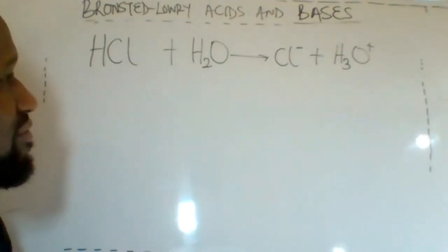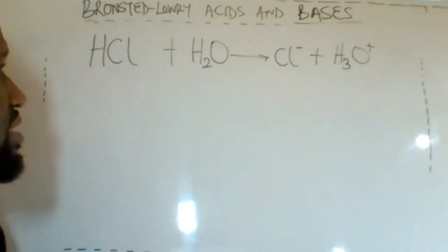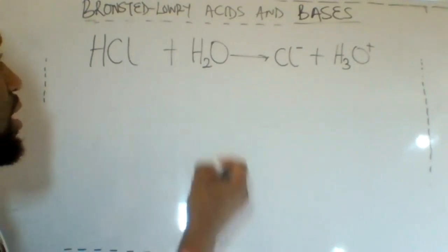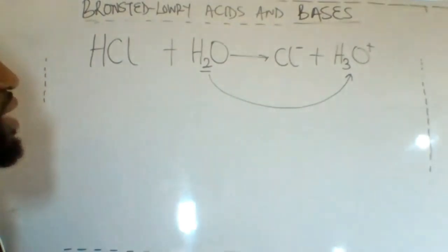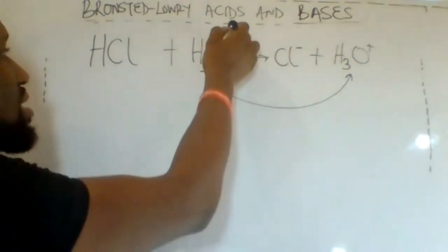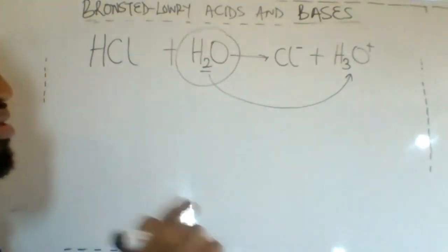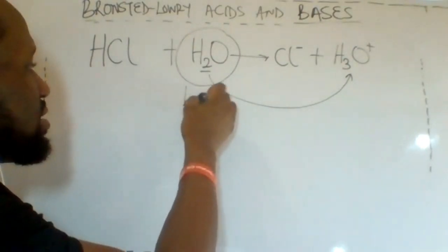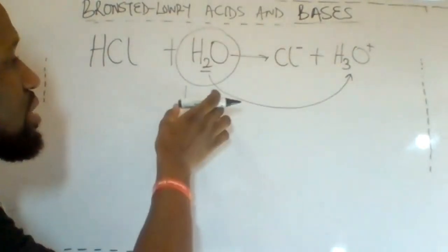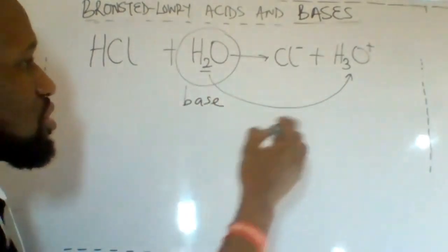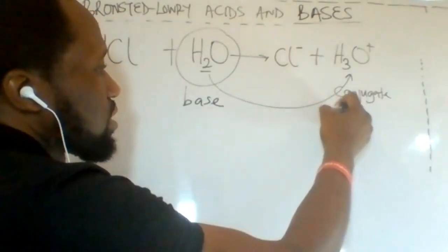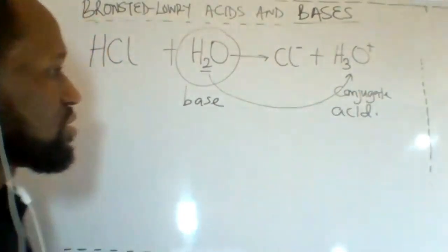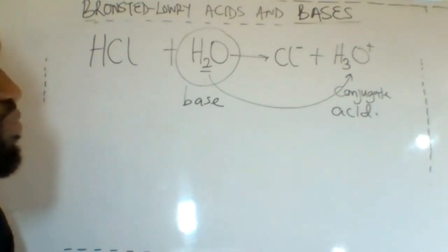From our first example of the Brønsted-Lowry acid, let's locate the Brønsted-Lowry base. H₂O becomes H₃O⁺ by accepting a proton. A substance that accepts a proton is the Brønsted-Lowry base. Therefore, H₂O is our base in that reaction. The substance formed when this base accepts a proton is called the conjugate acid.